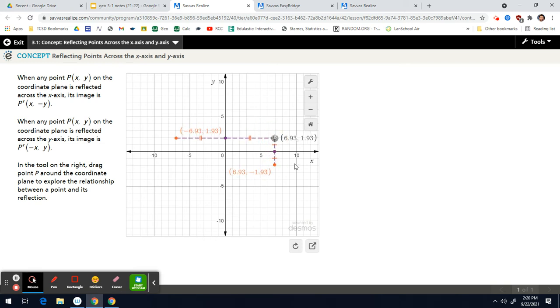As best I can, that's almost 7, almost 2. So notice when you go across the x-axis, it is the y that changes from positive to negative. And when I go across the y-axis, it is the x that changes from positive to negative.